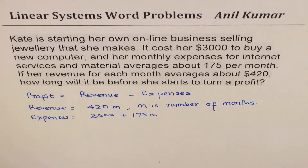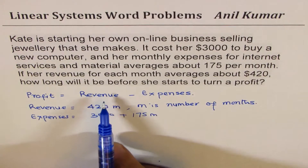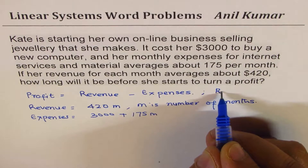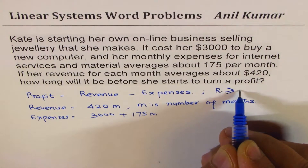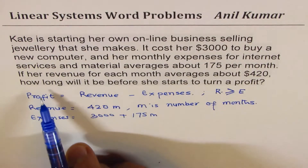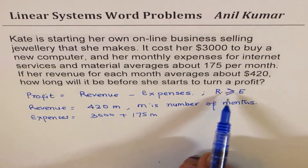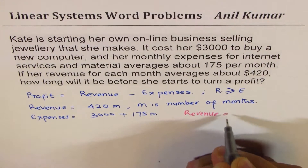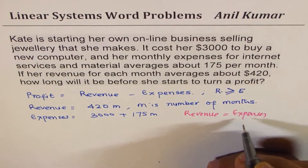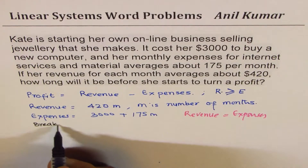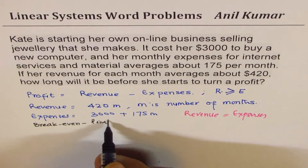We want to know when do we get the profit. You get the profit when both are equal. So if revenue is larger than expense, then we get profit. So profit means R is greater than or equal to expenses. You start getting profit when it's breakeven. So the question is, how long will it be before she starts to turn a profit? That means the situation we're looking for is revenue equals expenses. Before that, it is all loss because expenses are higher. After this, there's profit. We have to find this breakeven point — that's another term which can be used at times.